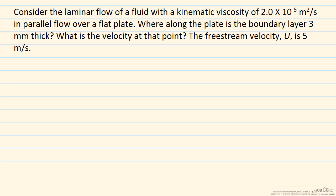The freestream velocity U is 5 meters per second. Let's start by drawing the system. We have a flat plate with a boundary layer of thickness delta. Our delta is going to equal 0.003 meters and our freestream velocity, which is the velocity of the fluid coming in, is 5 meters per second.